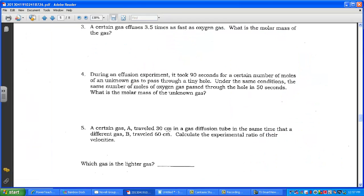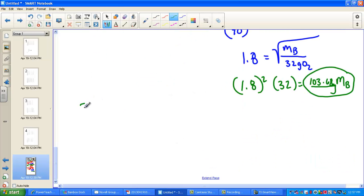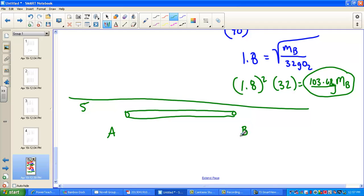One more. Gas A is traveling 30 centimeters in a diffusion tube. In the same time that a different gas, we'll call B, traveled 60 centimeters, calculate the experimental ratio of their velocity. And what's the lighter gas? Well, let's consider a picture to help set this race up. So question five. We have a diffusion tube. And I just think of like a piece of glass tubing. I have gas A, and I have gas B. At the very same moment, very same moment. So time is the same. And this is the critical part for experimental error. Time has to be constant.